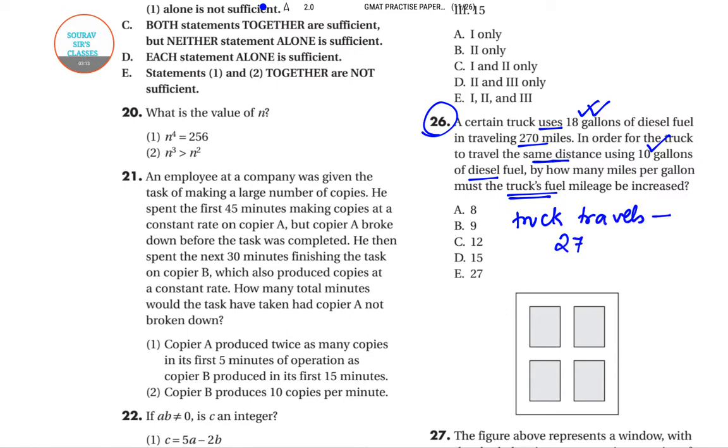So it is saying that the truck travels 270 miles, and this is done on 18 gallons. How much becomes your speed? This is your distance, and this much amount of fuel you require. So it is 270 by 18, which means it is getting 15 miles per gallon.